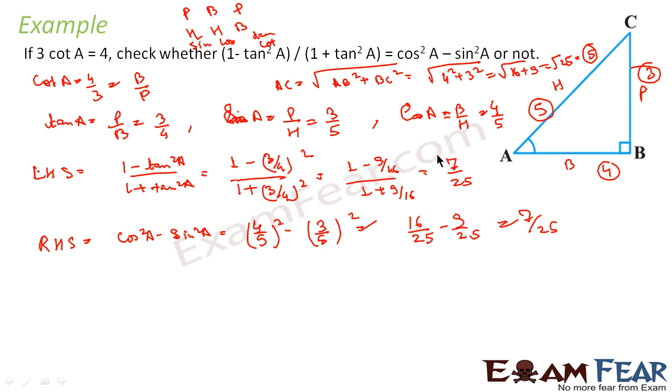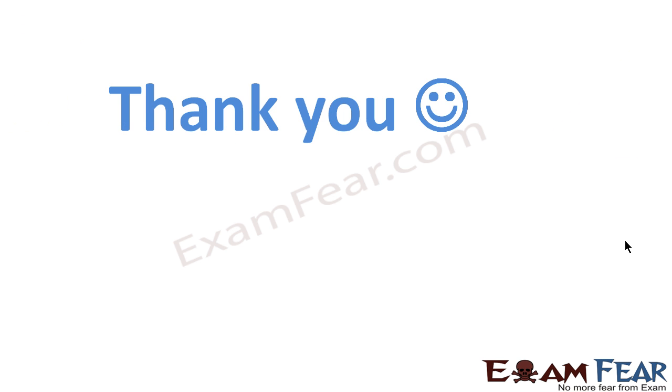You see, both LHS and RHS are same. Thus we can say that the statement is true. Why? Because both LHS and RHS we got are same, both are 7 by 25. Very simple. We have cot A, we can find all other ratios. We found tan A, cos A, and sin A, the three ratios we were looking for. We found LHS, we found RHS, and both were same.